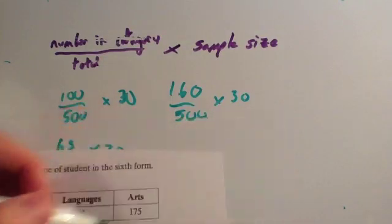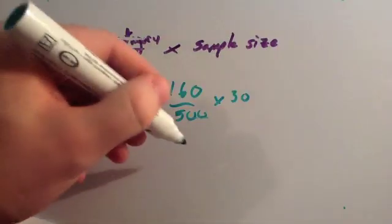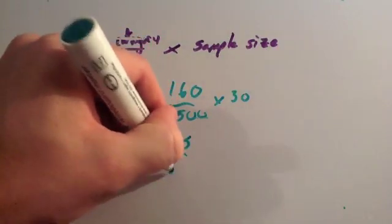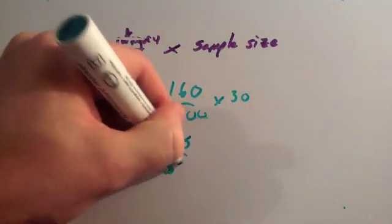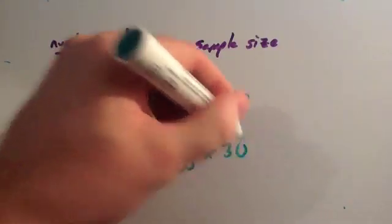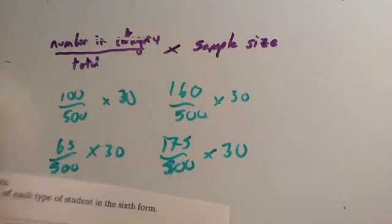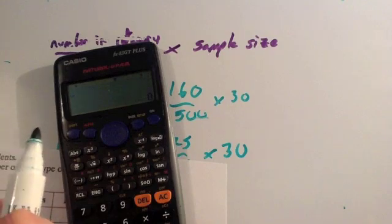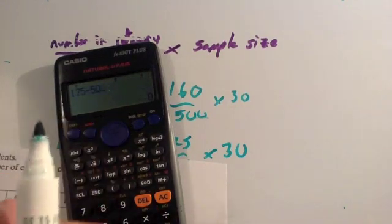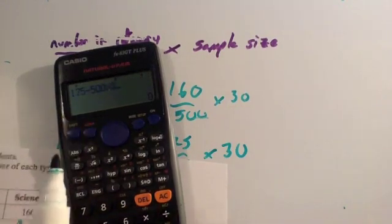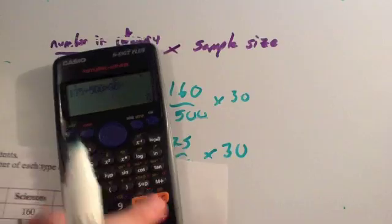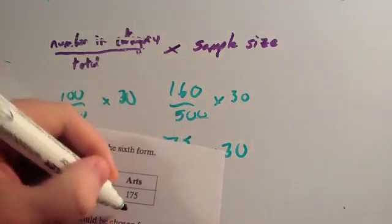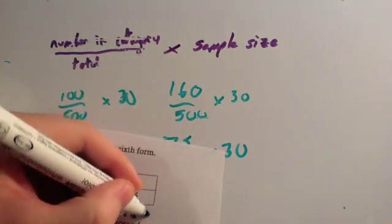And arts: arts is 175, so it's 175 out of 500 times by the sample size of 30. 175 divided by 500 times by 30 equals 10.5 — so we want to take 10.5 students doing arts.